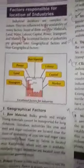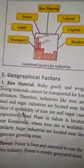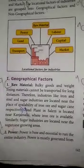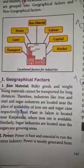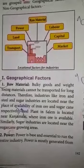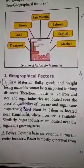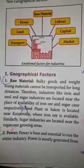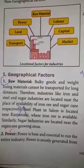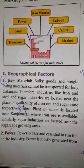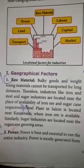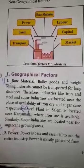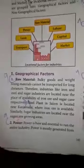First one is Geographical Factors. Raw materials: bulky goods and weight-losing materials cannot be transported for long distances. Therefore, industries like iron and steel and sugar industries are located near the places of availability of iron ore and sugarcane respectively. For example, the steel plant at Chelem is located near Kanjambalai where iron ore is available. Similarly, sugar industries are located near the sugarcane growing areas.